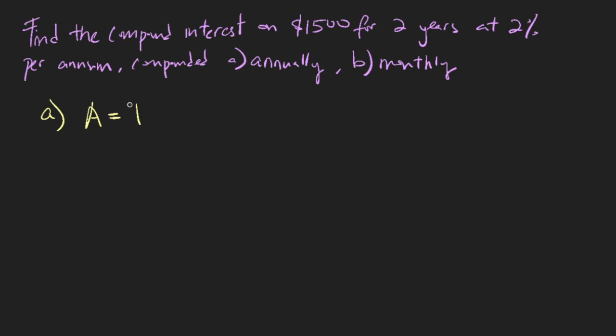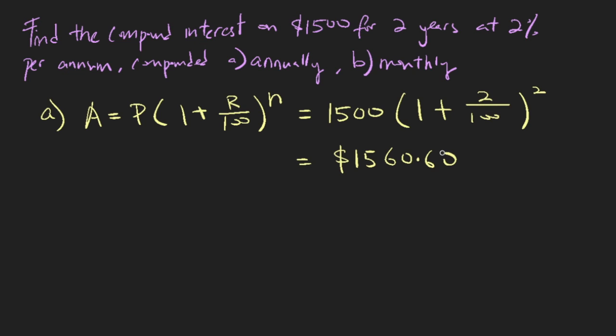Amount of money is equal to $1,500. So in this case, your principal is $1,500, 1 plus 2% over 100 to the power of 2, because two years. So if you work this out, you will have $1,560.60. So that is not too hard.